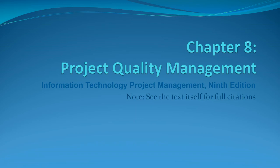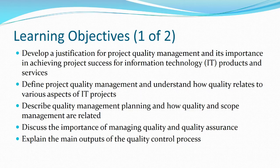We're going to be talking about quality management — are the results of our project living up to the standards we have set for the final product? Our objectives for this chapter are to talk about why quality management is important and what the various aspects of it are, how do we manage quality, and what are the outputs of quality control?